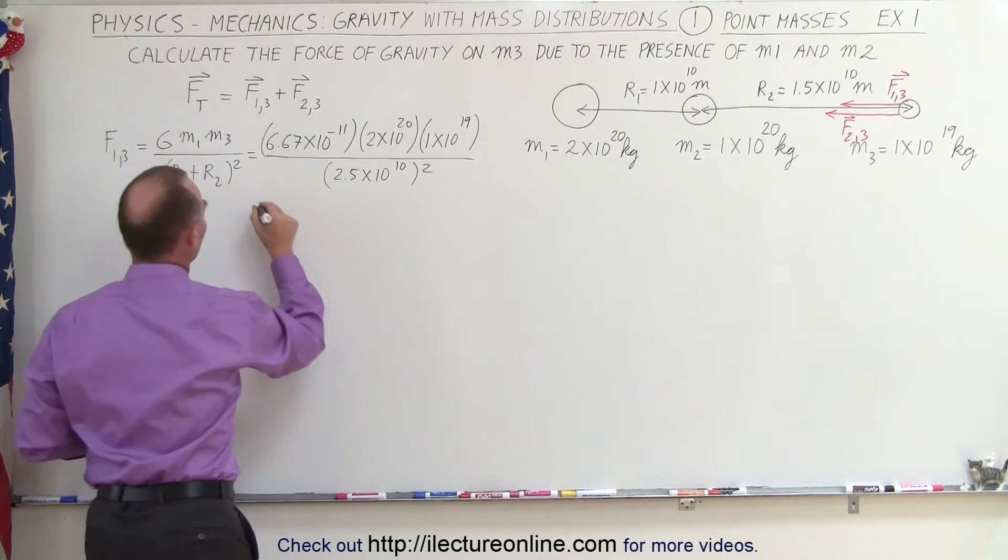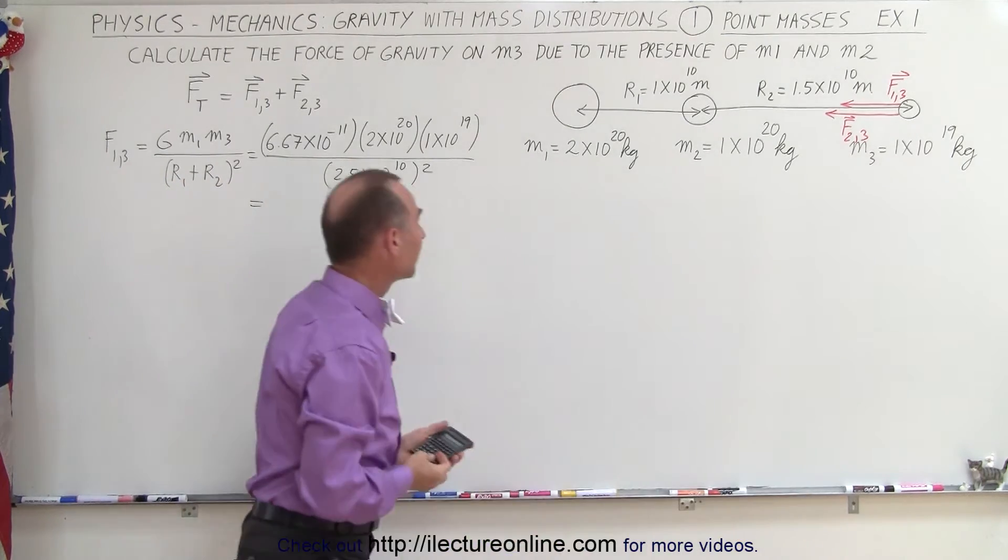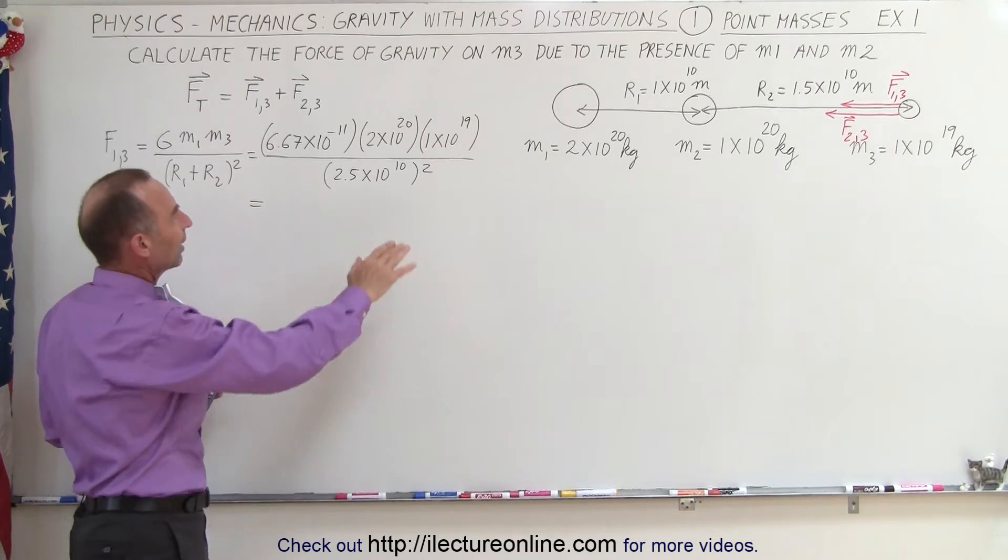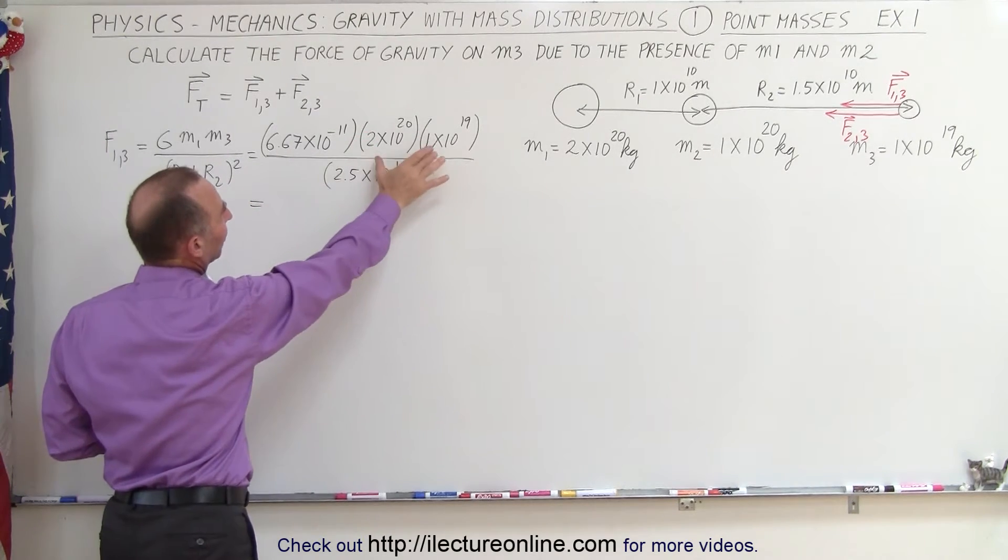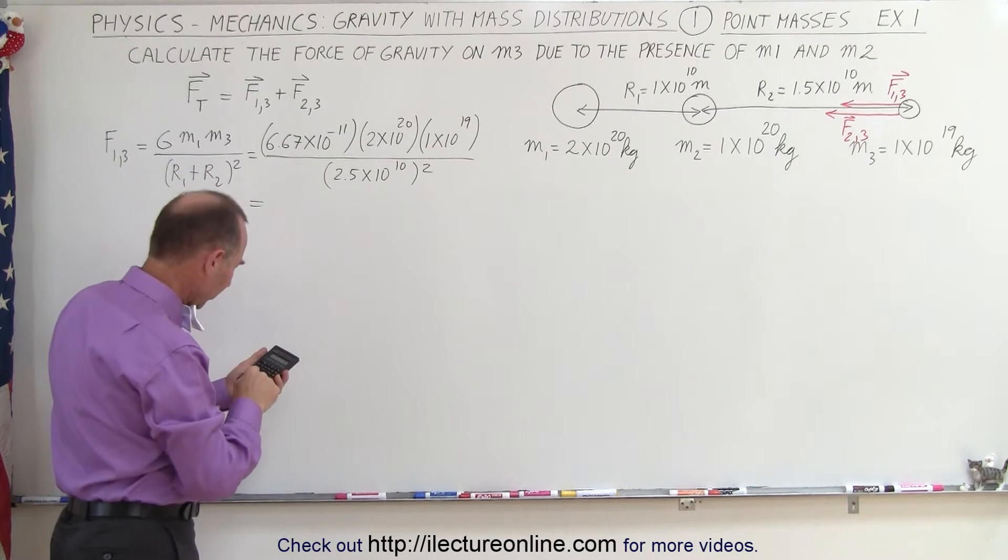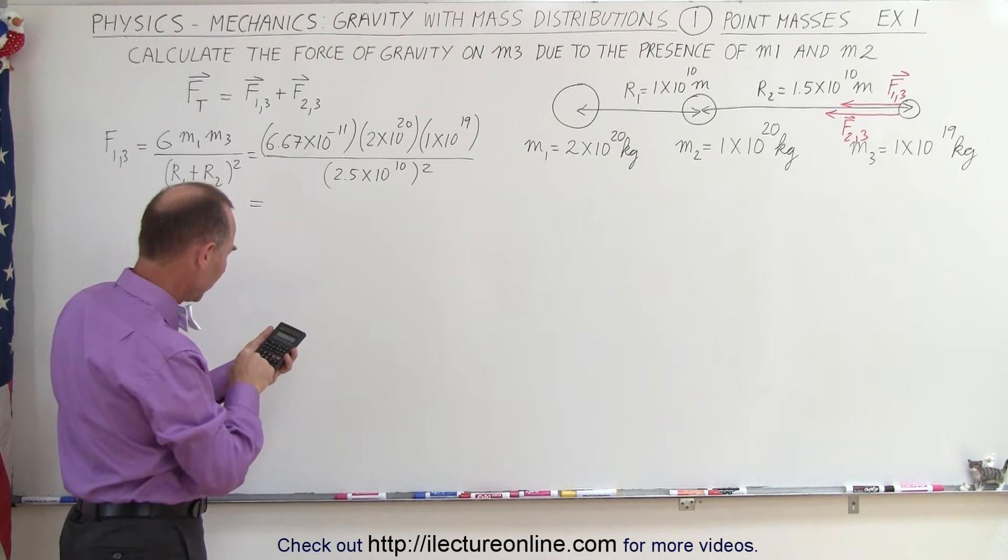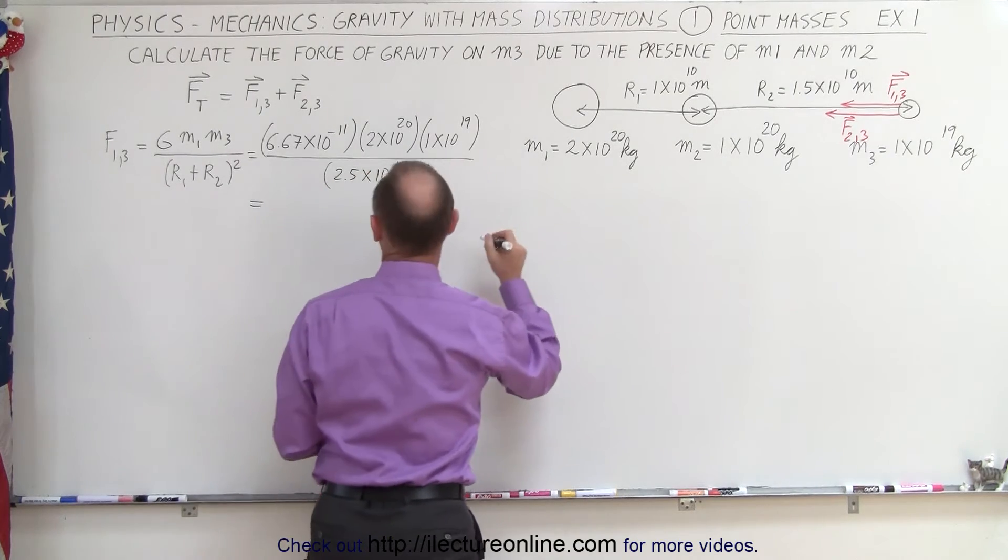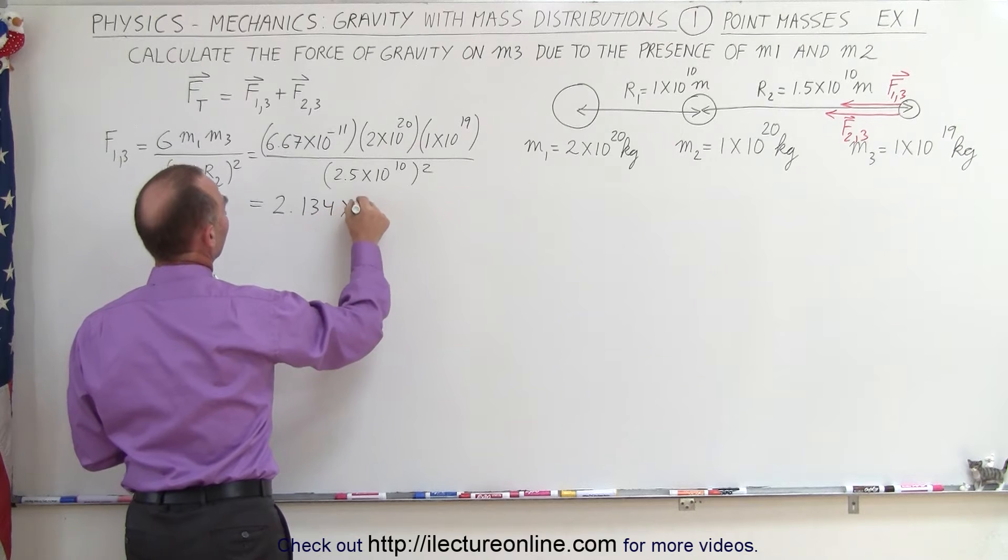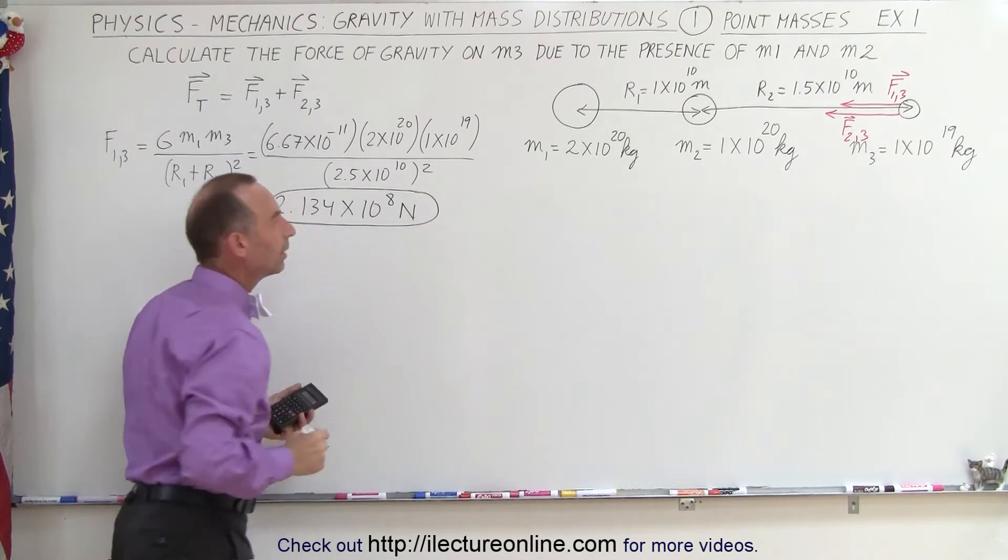So that gives us the magnitude of that force. Of course we're going to need a calculator. And as far as the significant figures, notice that I try to keep things simple, so we're going to keep a few extra decimal places. Don't be alarmed because this is just an example and we just want to keep numbers simple. So 6.67 e to the minus 11 times 2 e 20 times 1 e 19 divided by 2.5 e to the 10 squared equals, and we get 2.134. So 2.134 times 10 to the 8 newtons, so that would be the force between mass 1 and mass 3.